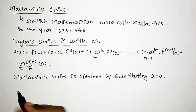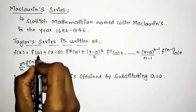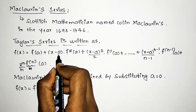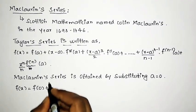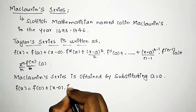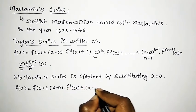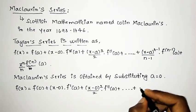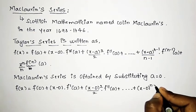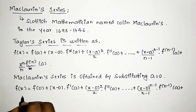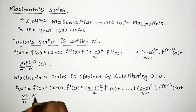Wherever there is an a, just replace it with 0. So f of x equals f of 0, plus x minus 0 into f dash of 0, plus x minus 0 the whole square divided by 2 into f double dash of 0, and similarly x minus 0 raised to n minus 1 divided by n minus 1 into f raised to n minus 1 of 0, plus the nth term written as x raised to n divided by n minus 1 into f raised to n of a.